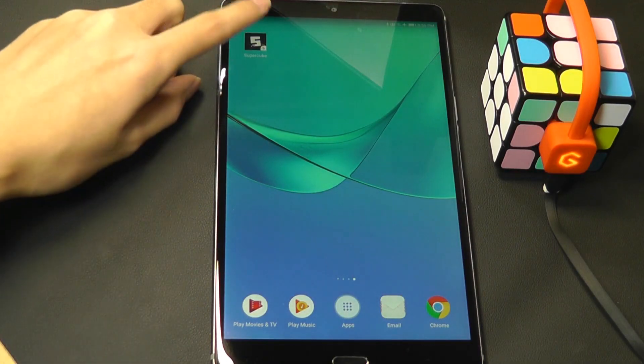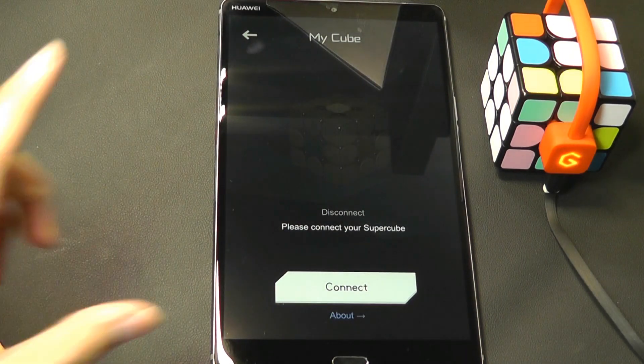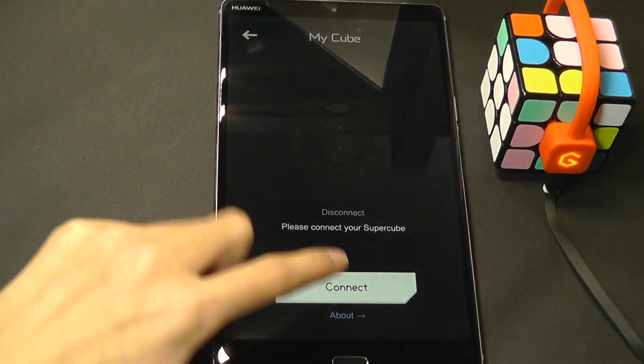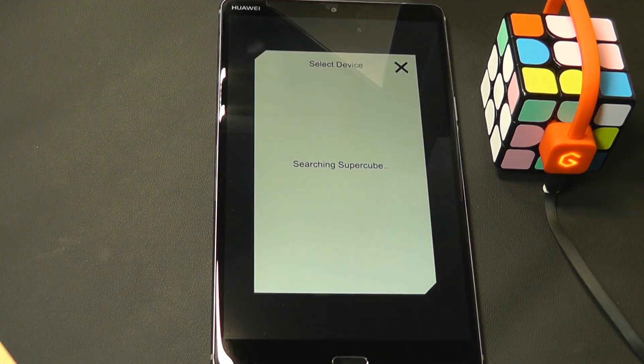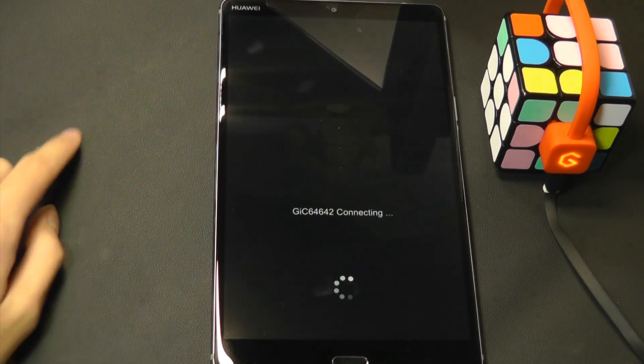The app is called SuperCube by Geiger in the store, and first thing we need to do is connect it. So we're going to tap on connect, it's going to search using Bluetooth, and it's found the cube here.